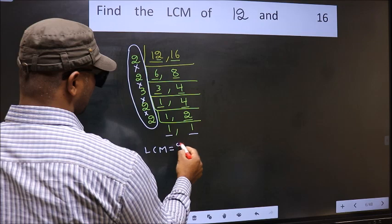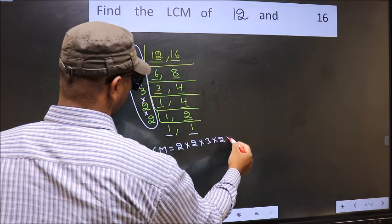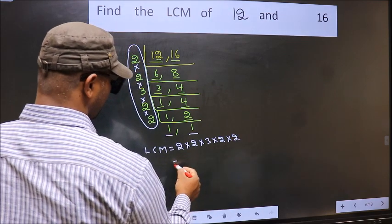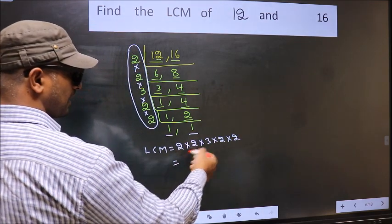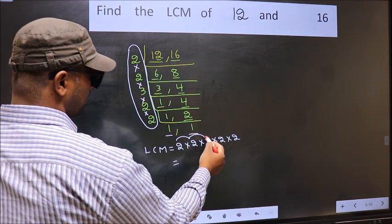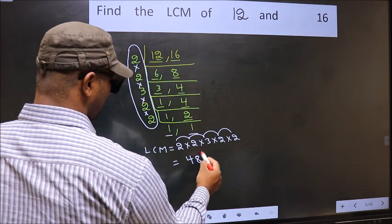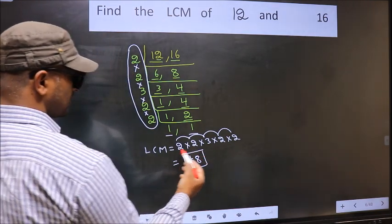That is 2 into 2 into 3 into 2 into 2. So let us multiply these numbers. 2 into 2 is 4 into 3, 12 into 2, 24 into 2, 48. So 48 is our LCM.